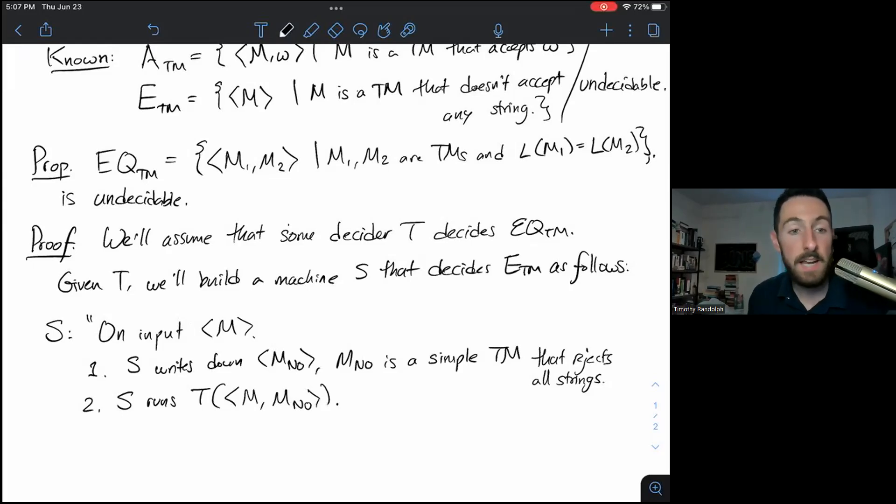So S runs T on input M paired with M_No. So T is a decider by assumption. So this simulation is guaranteed to halt. And we'll do the following. If T(M, M_No) accepts, then we accept. Otherwise, reject. Now, I claim this is a decider for ETM. Why? Well, T on M and M_No will accept if and only if these two machines accept the same language. That's by assumption. This is what T does. It decides EQTM.